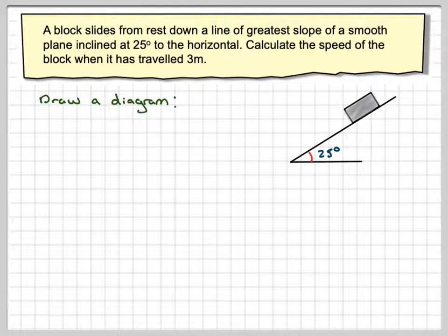Now what forces are acting on the block? Well, there'll be the weight acting down mg, and a normal reaction for the block touching the slope. It's smooth, therefore there's no friction.